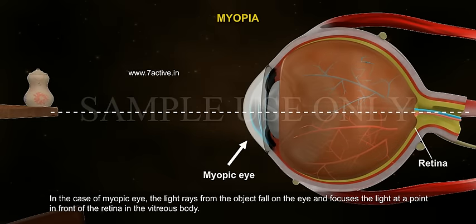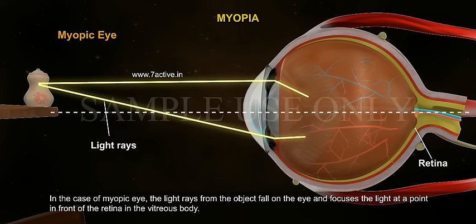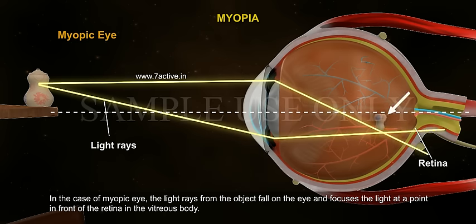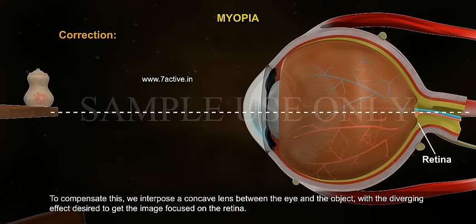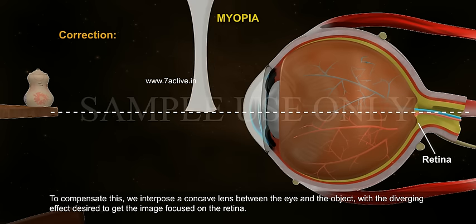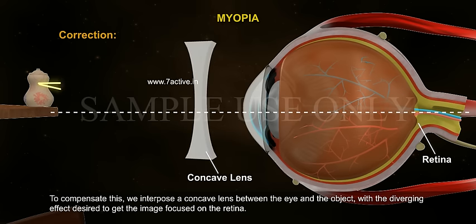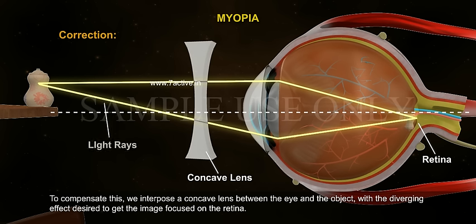In the case of a myopic eye, the light rays from the object fall on the eye and focus at a point in front of the retina in the vitreous body. The correction for Myopia: to compensate this, we interpose a concave lens between the eye and the object, with the diverging effect desired to get the image focused on the retina.